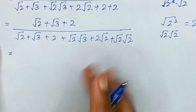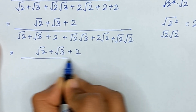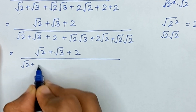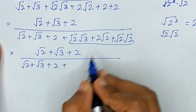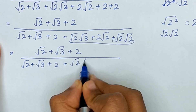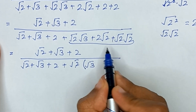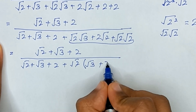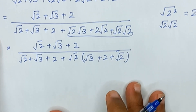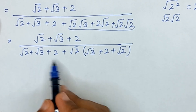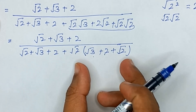Here we have square root of 2 plus square root of 3 plus 2, divided by square root of 2 plus square root of 3, plus 2. In all three terms in the numerator, square root of 2 is common. So dividing through gives: square root of 3, then 2, then square root of 2. We can see that square root of 2 plus square root of 3 plus 2 and square root of 3 plus square root of 2 plus 2 are the same.